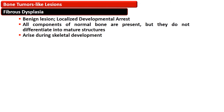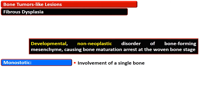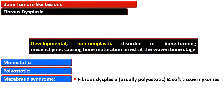Fibrous dysplasia is a benign lesion considered a localized developmental arrest. All components of bone are present but do not differentiate into mature structures, arising during skeletal development. It is a developmental non-neoplastic disorder of bone-forming mesenchyme causing bone maturation arrest at the woven bone stage. It presents in various forms: if only a single bone is affected it is termed monostotic; when multiple bones are involved it is polyostotic. Mazabraud syndrome is when polyostotic fibrous dysplasia is associated with soft tissue myxomas.